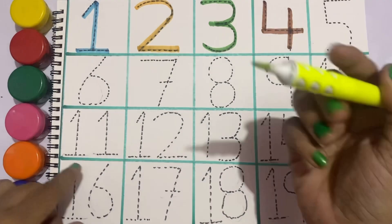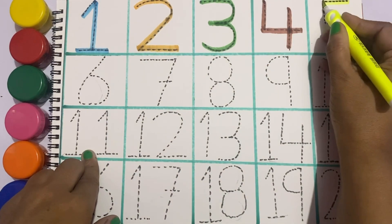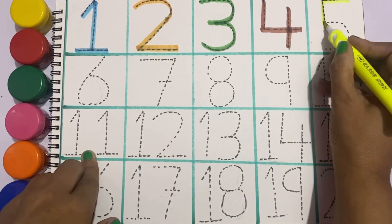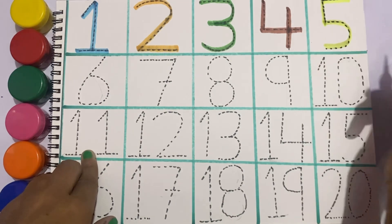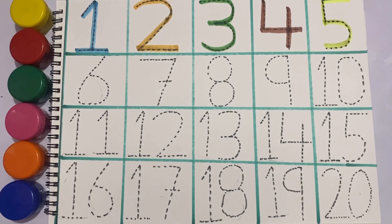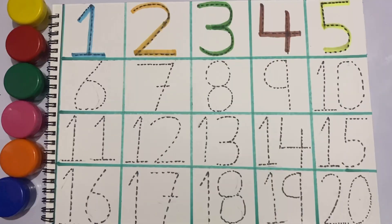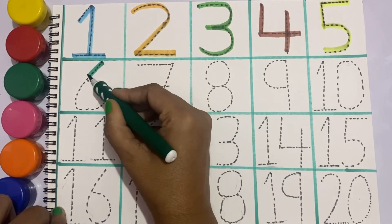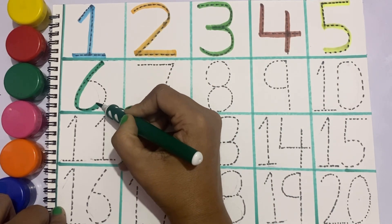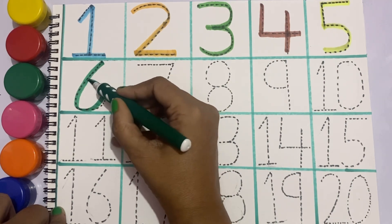Four. Yellow color, let's draw five. Five. Green color, let's draw six. Six.